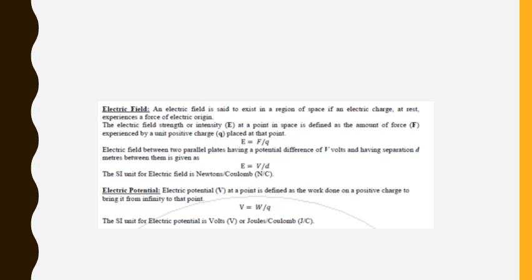We have already studied electric field. How can we say that a field exists near an electric charge? Suppose you place an electric charge anywhere in space and it is at rest — it may experience a force due to the electric field. The electric field intensity or strength at any point in space is defined as the amount of force experienced by a positive charge placed at that point.